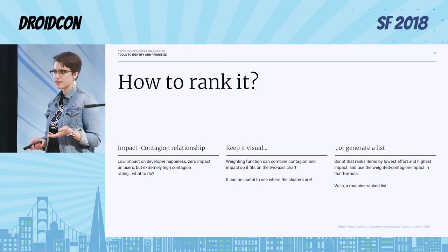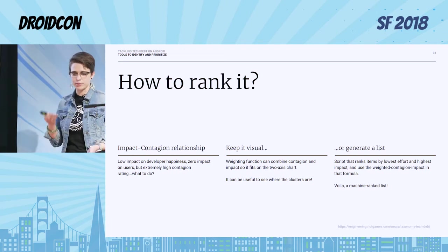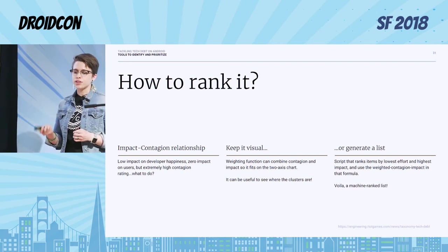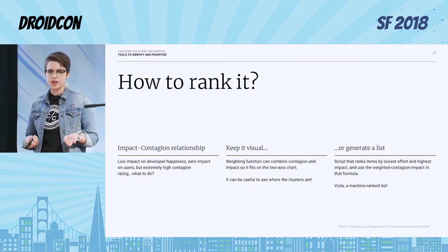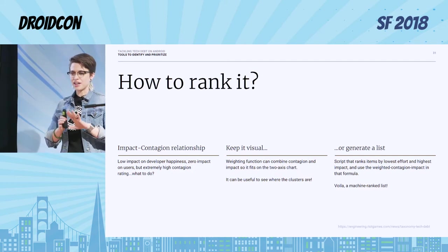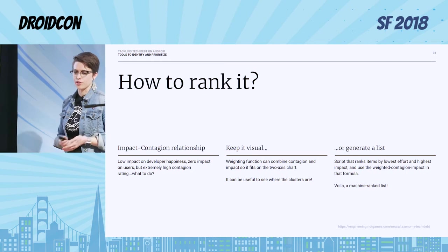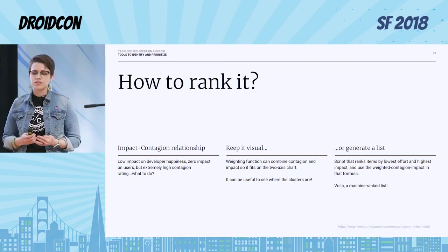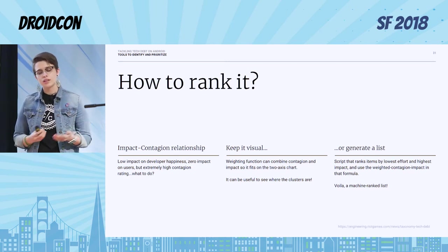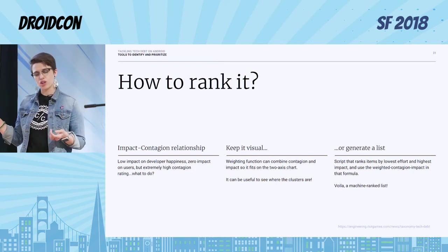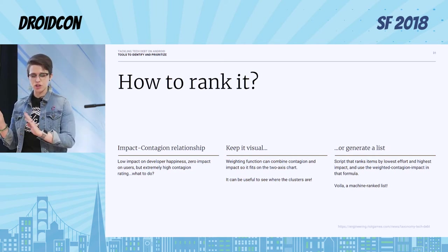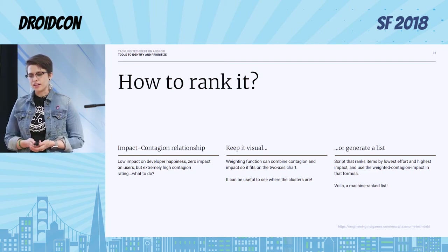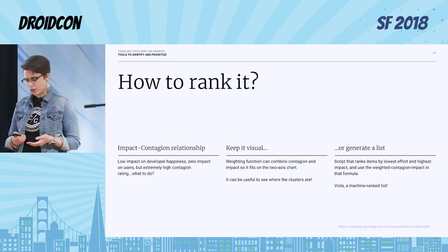So how do we rank stuff that has maybe high impact and low contagion, or low impact but high contagion? Even if there's low impact on developer happiness and zero impact on users, if the tech debt has an extremely high contagion rating, you probably should still fix it because it's going to get really out of control and at that point the developer happiness impact might go up — but the effort will also be huge because it has spread so far through your code base. When you're ranking, you can try to keep it visual using a two-axis impact/effort chart with a weighting function after you rank by contagion, or just have a list — plug in your effort, impact, and contagion values, and you have a machine-ranked list.